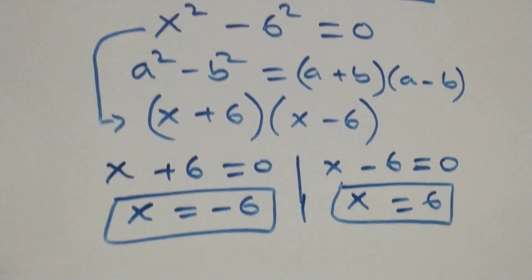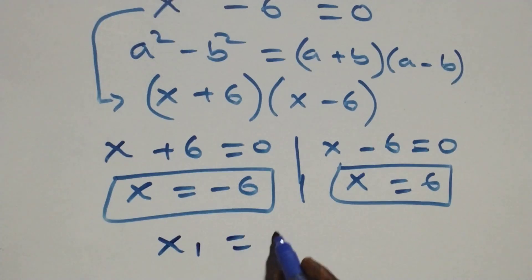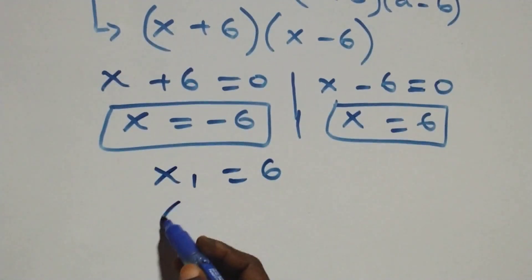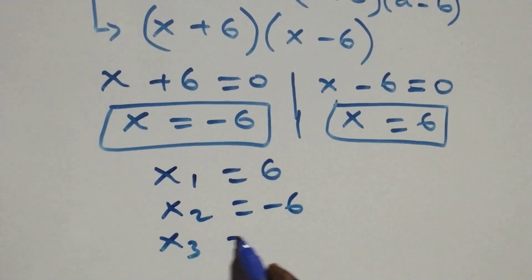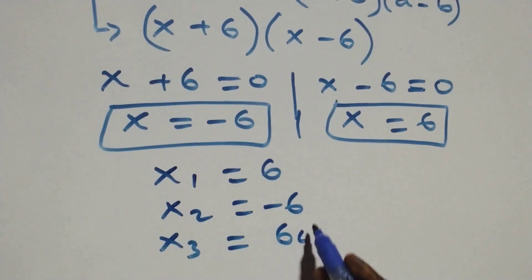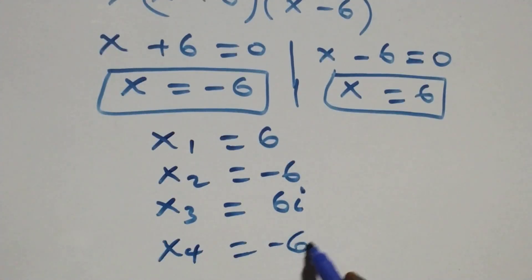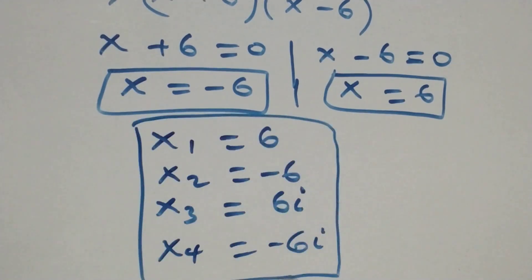So we have two real and two complex solutions altogether — four solutions. Writing them out: x₁ = 6, x₂ = −6, x₃ = 6i from the complex solution, and x₄ = −6i from the complex solution.